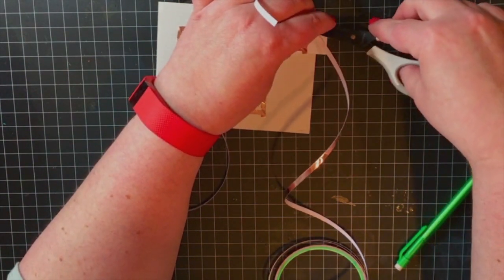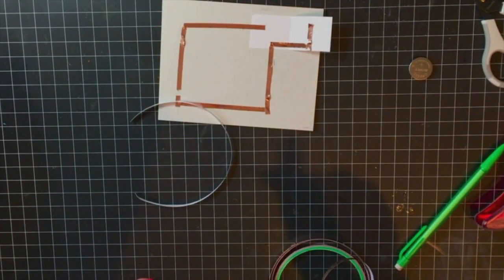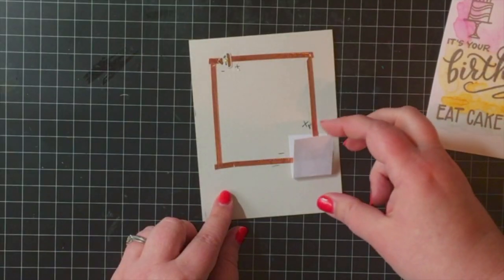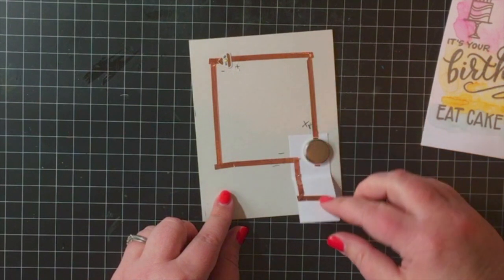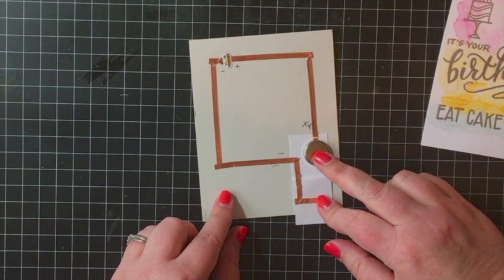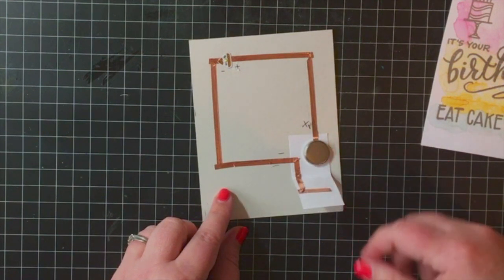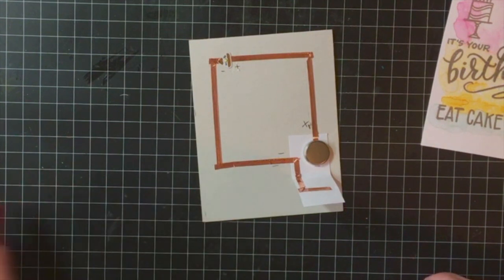What's going to happen is that when that cardstock is folded shut with the battery in place then the light up element will work. I've gone ahead and placed my chibitronic light at the break in the circuit where the light is going to go and then I've also placed my battery into the battery house.